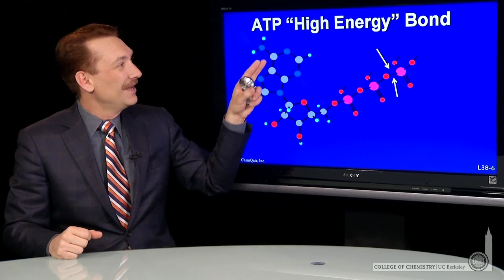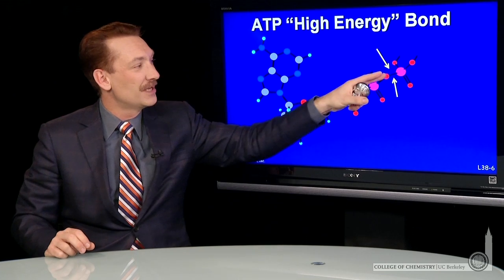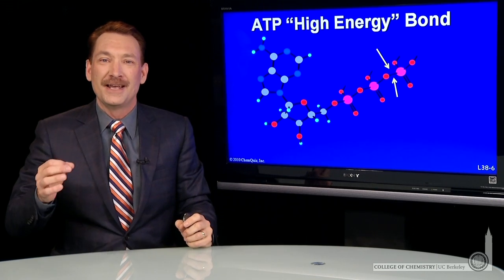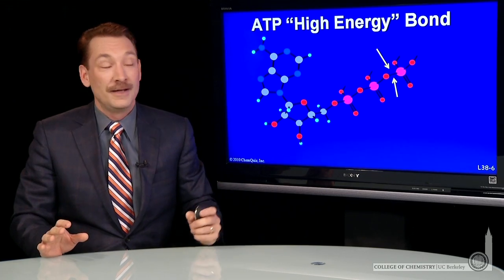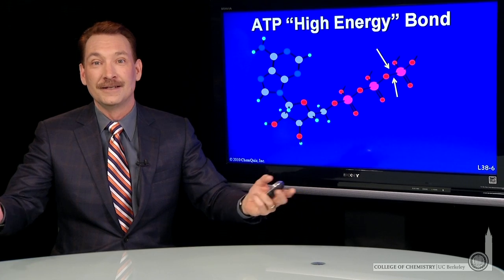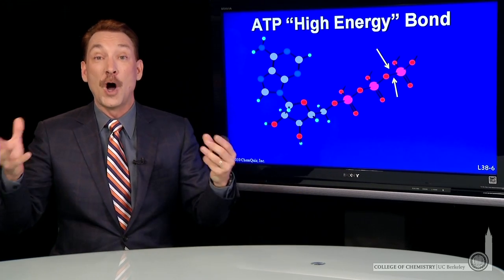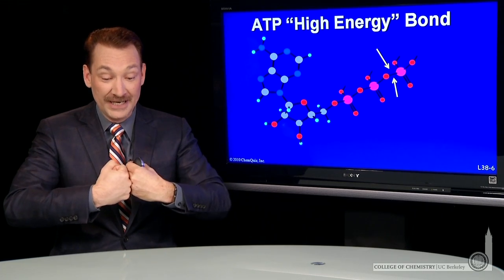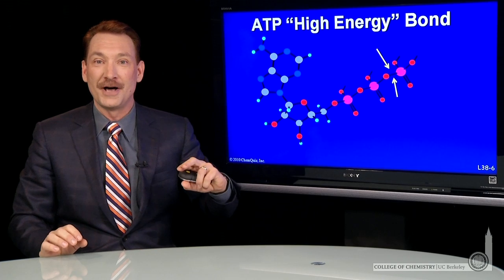Now, ATP has a high energy - I put that in quotes - phosphate bond, because you read that sometimes in textbooks. But high energy phosphate bond is actually something of a misnomer. It implies that if you break that bond, energy is released. And of course, as chemists, we know nothing could be further from the truth. It always requires energy to break bonds. You have to put energy in to break a bond. You're pulling the bond apart.